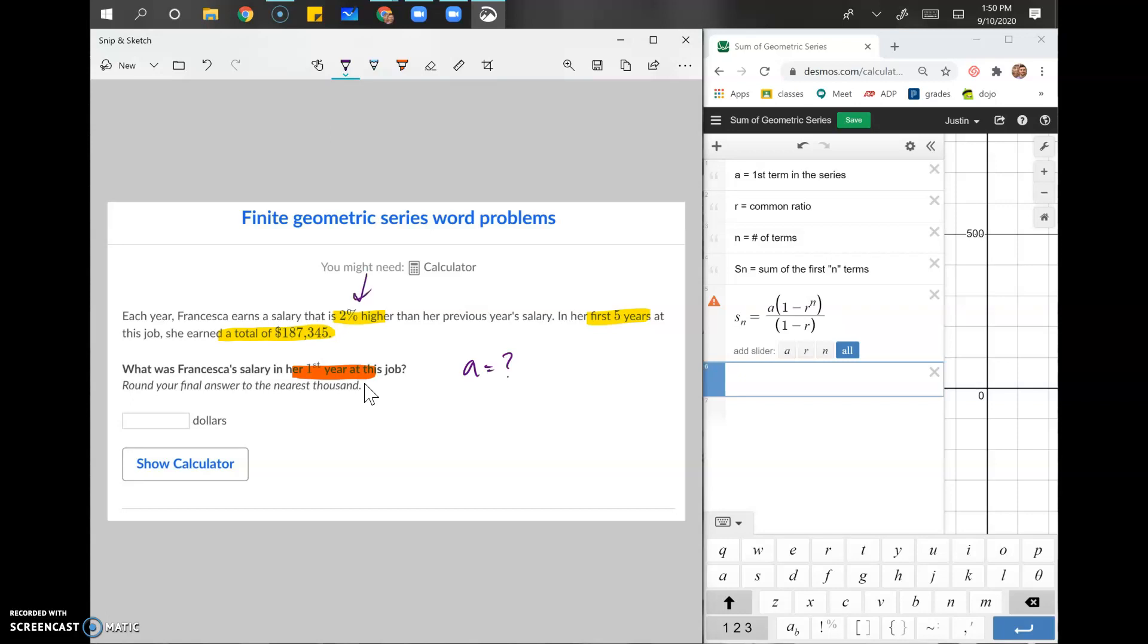So let's get 2%. 2% has to be the ratio because percentages are ratios. 2% higher. We know that N has to be, well, we don't know what N is yet. We know S of N. What's S of N? Total. If that doesn't give it away, I don't know what does. So we know the total is 187 comma 345. And which means that the number of terms here is five, five years. That should make sense. That's more intuitive. N is always going to be a little bit more intuitive.